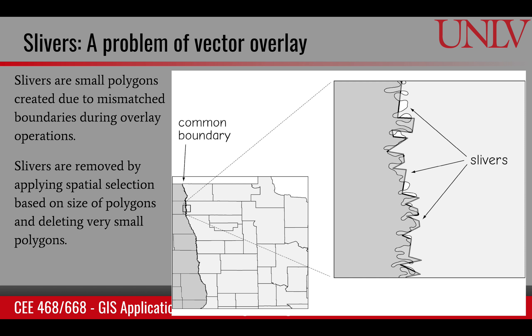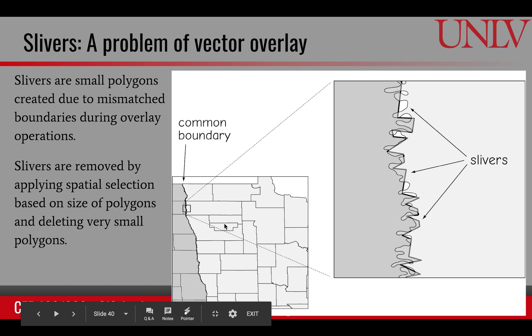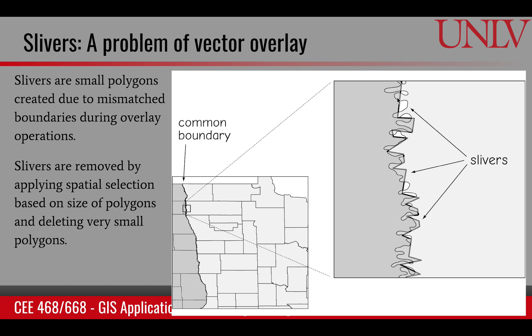Now let's talk about some common problems that can occur. One common problem in overlaying is slivers. If two data sets don't have a clear matching boundary, the boundary will have different overlapping scenarios, and little polygons are created wherever the boundary doesn't match exactly. These polygons become part of the output. One way to remove these slivers is to go to the attribute table, set a threshold area, identify polygons smaller than that threshold, and delete those entries from the attribute table. It's a common problem but easy to solve.